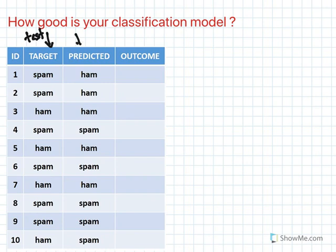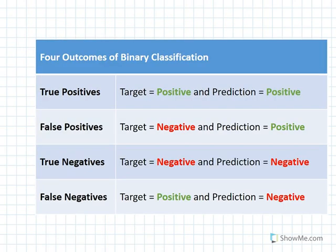This is the data that your model actually predicted. Let's say this is a simple problem where you're trying to classify whether an email is spam or ham. This is a binary classification problem, and binary classification problems can have four different outcomes.